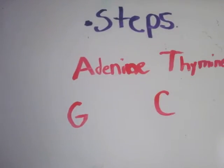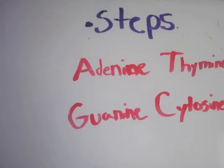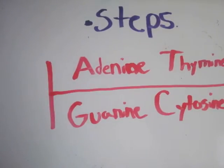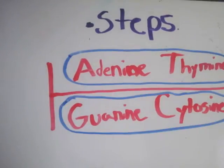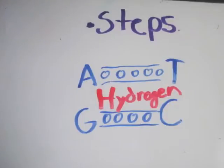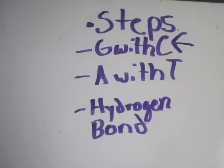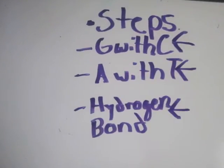Adenine, thymine, cytosine, and guanine make up these steps. Adenine and thymine will pair together, and guanine and cytosine pair together. They are formed by a hydrogen bond. So let's remember G with C, A with T, and a hydrogen bond.